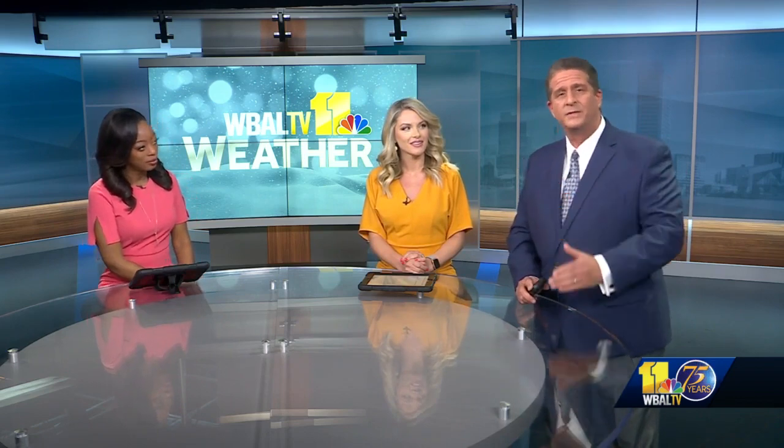The storm has to manufacture its own cold air. It's kind of a weird thing. You guys know the higher you go up in the atmosphere, the colder it gets. Start at the bottom of the mountain, you walk to the top, it gets colder. Coincidentally, you may have wondered why I-95 is always the rain-snow line. That's why.